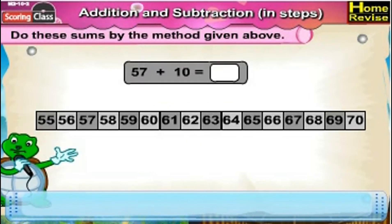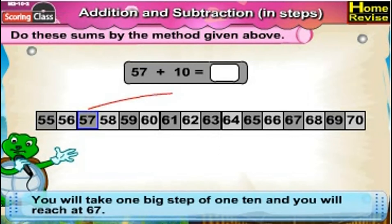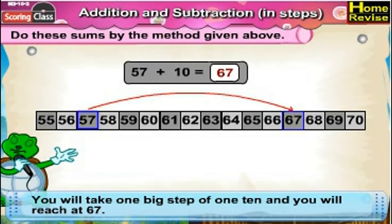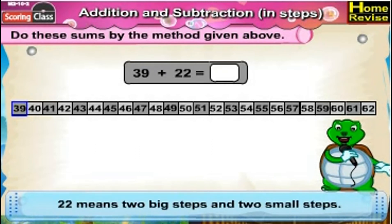Number 2: 57 plus 10. You're at 57. In order to find 57 plus 10, you will take one big step of 10, and you will reach 67. So 57 plus 10 is 67.